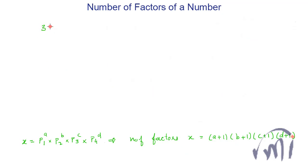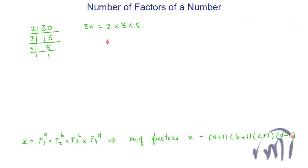Suppose I want to find how many factors the number 30 has. It's even so we divide by 2 to get 15; 15 divided by 3 gives 5; and 5 divided by 5 gives 1. So 30 = 2¹ × 3¹ × 5¹. When finding all factors of 30, we have two options for the power of 2 (0 or 1), two options for the power of 3 (0 or 1), and two options for the power of 5 (0 or 1). So we should have 2 × 2 × 2 = 8 factors for 30.